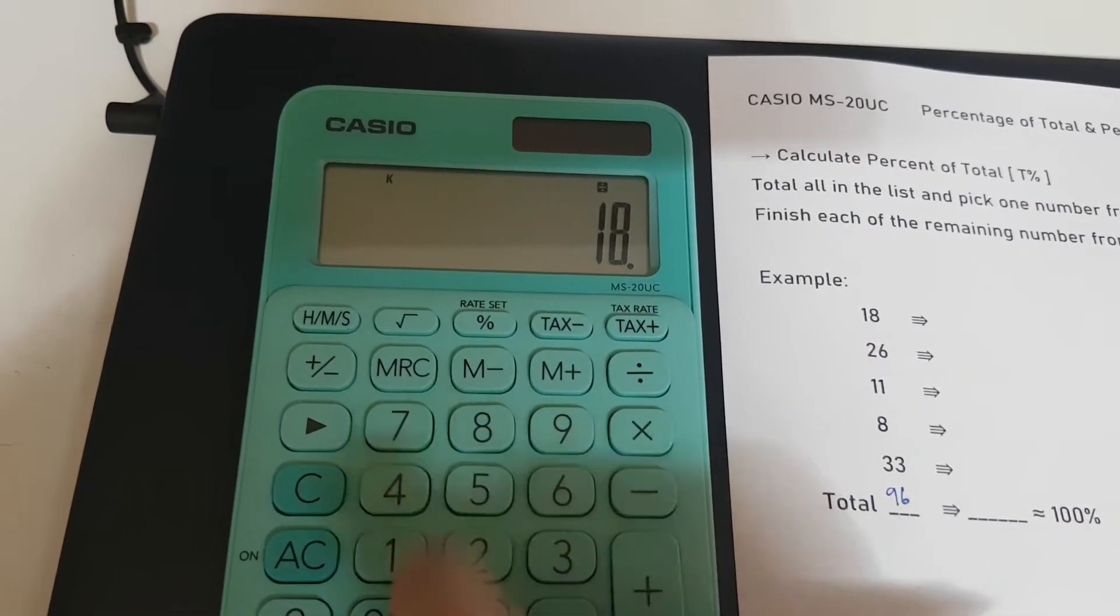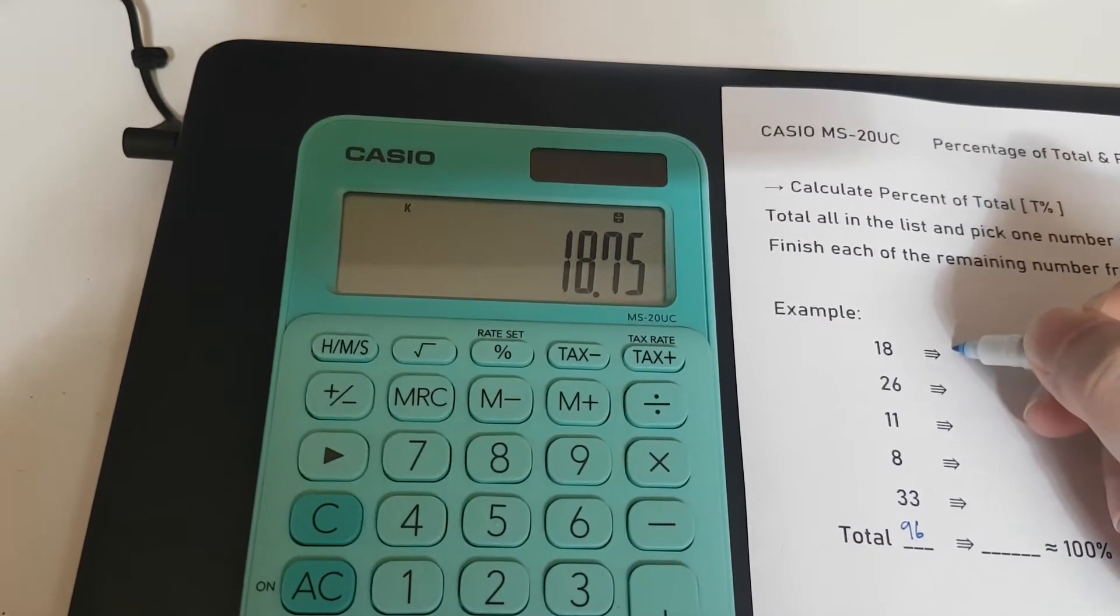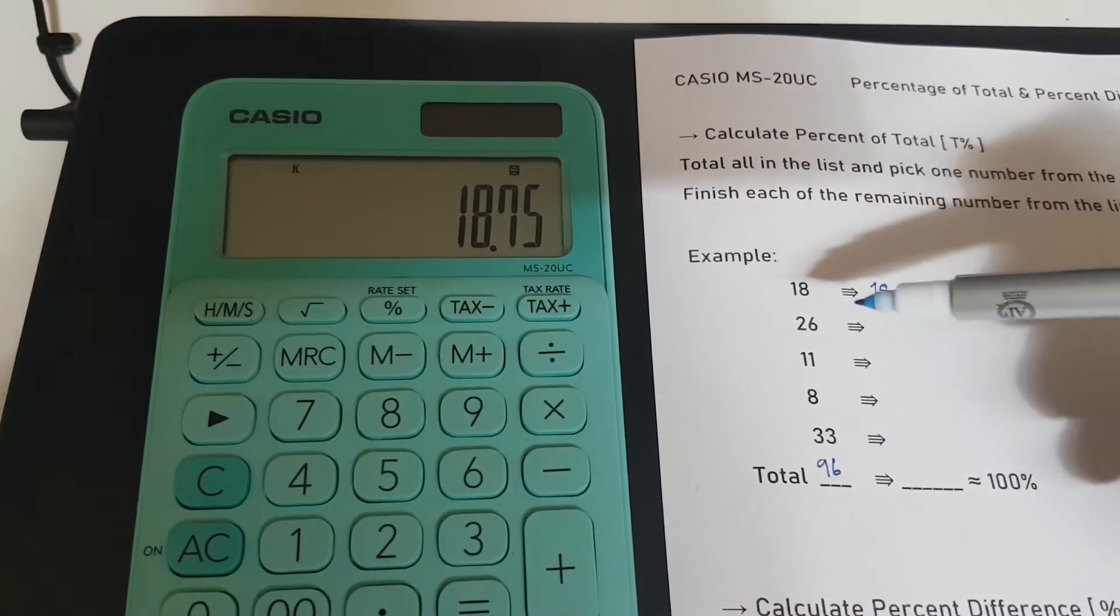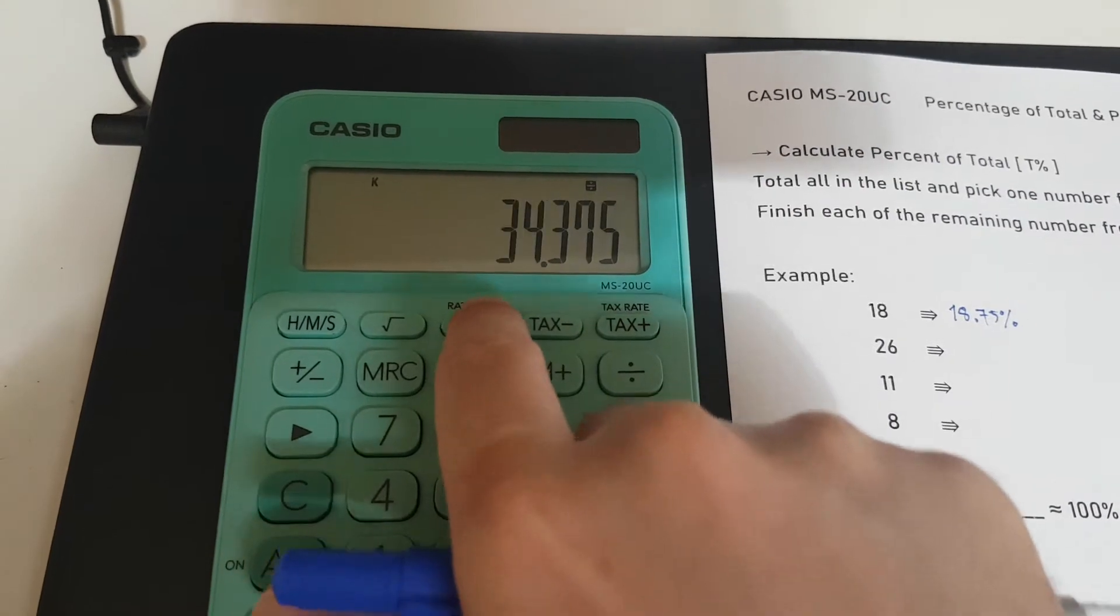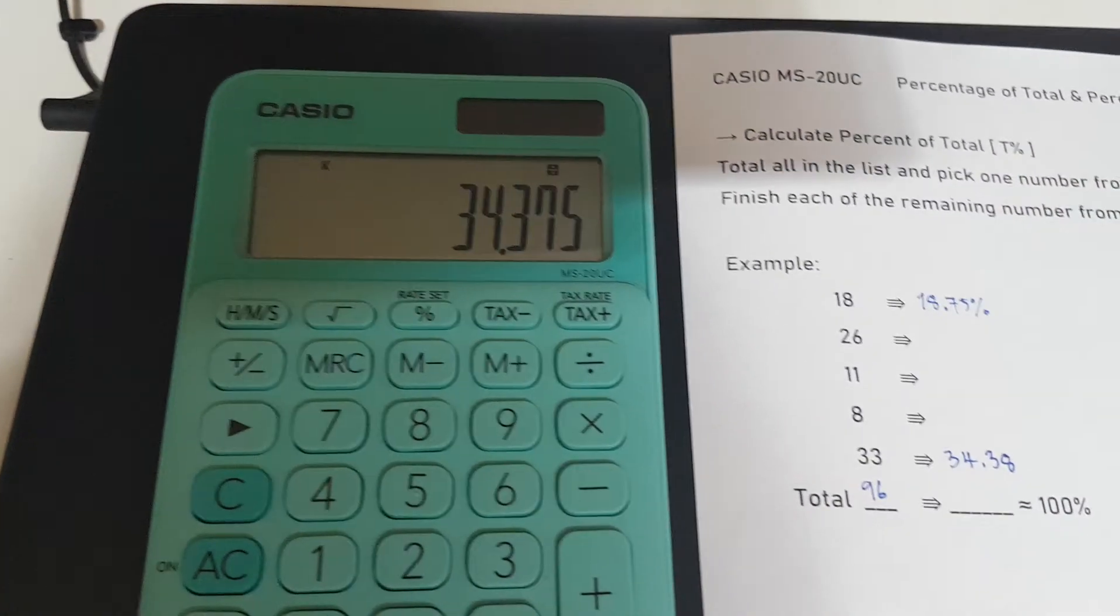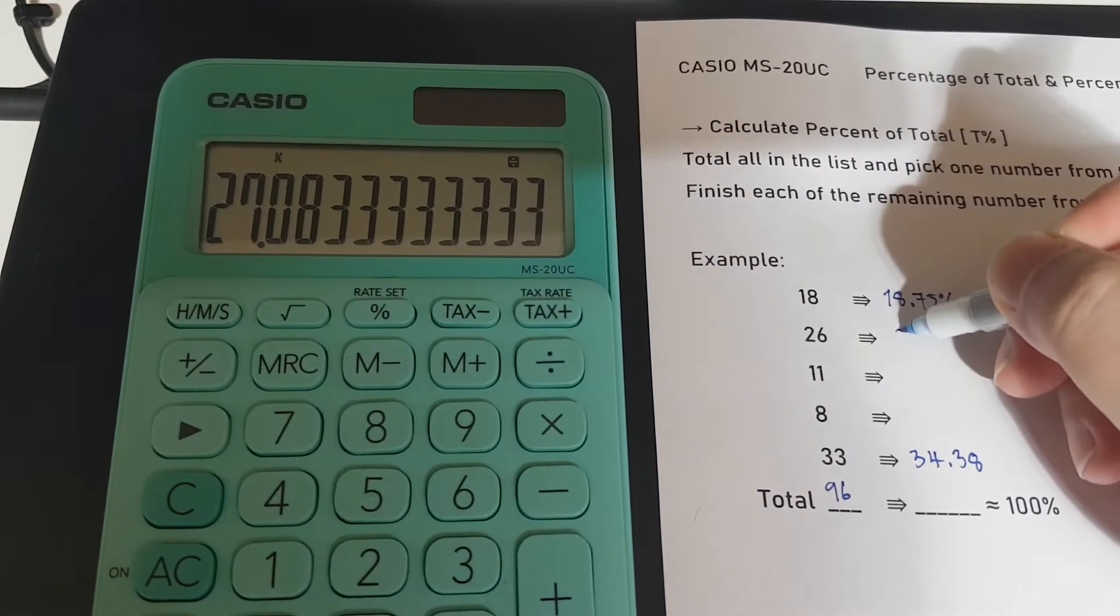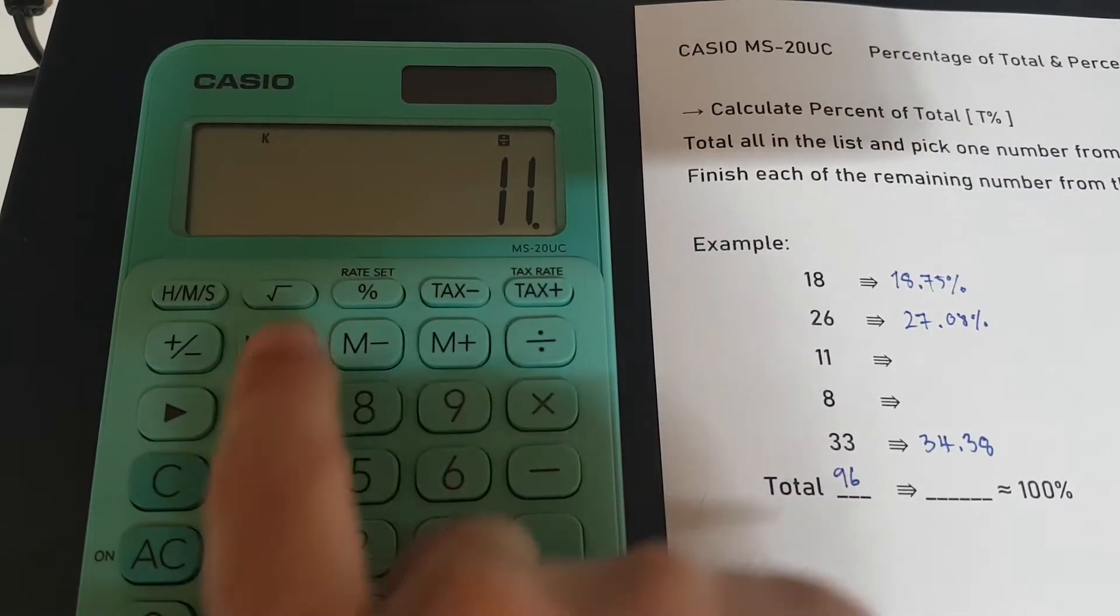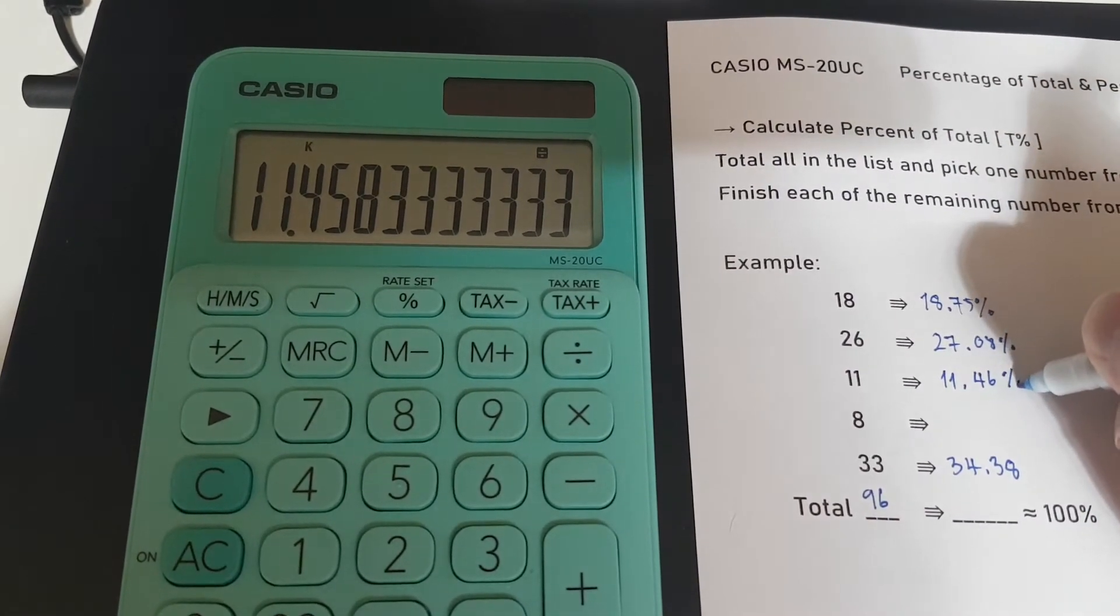18 percent. It's going to be 18.75%. And you don't have to do from top to bottom; you can start at the bottom as well. 33 percent, 26, 11, and then 8.